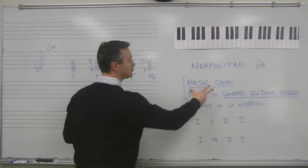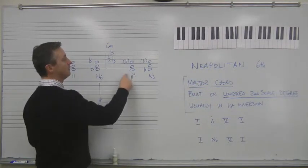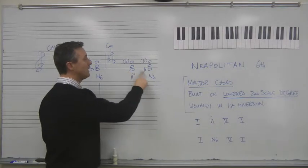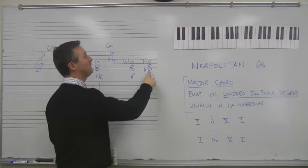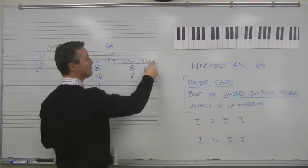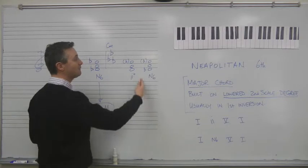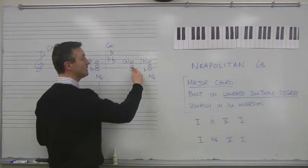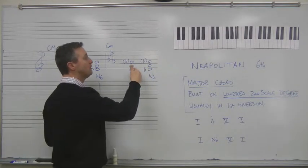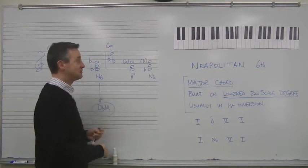So we're going to have to construct a major chord built on the lowered second scale degree in minor. Well, the second scale degree is a D. So we lower it to D-flat and we build a major chord. The only difference is the A is already flat. So we don't have to change quite as much to get from the original D-diminished chord to a D-flat major chord, which is the Neapolitan sixth. So the chord is the same.